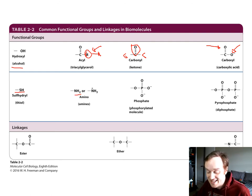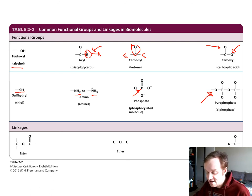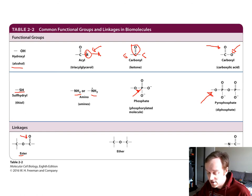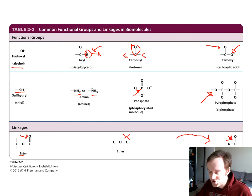An amino group is NH2 or NH3+. A phosphate group is a phosphorus with a double-bonded oxygen and three single-bonded oxygens around it. A pyrophosphate is two phosphates linked together. Within the center of a carbon chain, an ester group is a carbon with an oxygen between two carbons plus a double-bonded oxygen on one of them. An ether group is the same but without the double-bonded oxygen. A peptide group is a nitrogen linked to a carbon with a double-bonded oxygen.